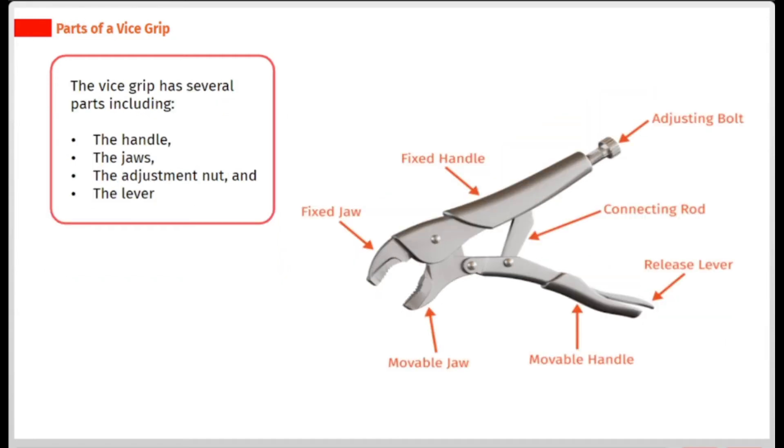The vice grip has several parts including the handle, the jaws, the adjustment nut, and the lever.